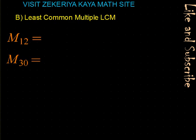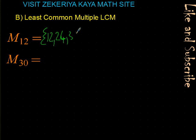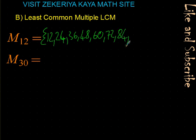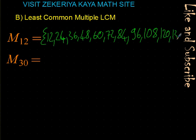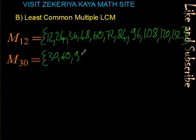Now, least common multiple. First let's see the idea of multiples. Multiples of 12: 12, 24, 36, 48, 60, 72, 84, 96, 108, 120 — and it continues. Multiples of 30: 30, 60, 90, 120, 150, 180 — and it continues.